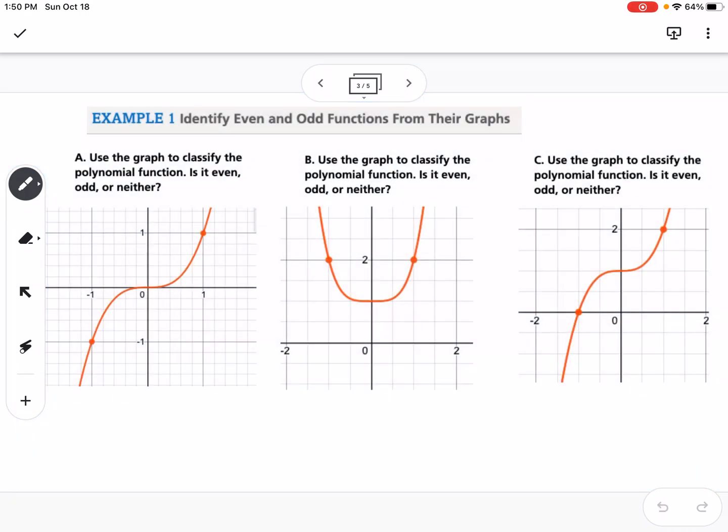So identifying from a graph, you're looking for symmetry. If we look at these three graphs, use the graph to classify the polynomial function, is it even, odd, or neither?